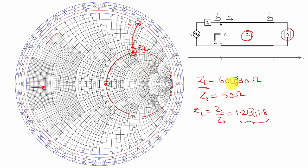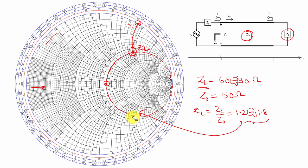Similarly, if we have a negative sign over here, it will come on the downside. So if I put a negative sign here, this will become 1.2 minus j1.8. This value will be in the negative sign and we can find it in the lower half. This is how we can find the normalized load impedance.